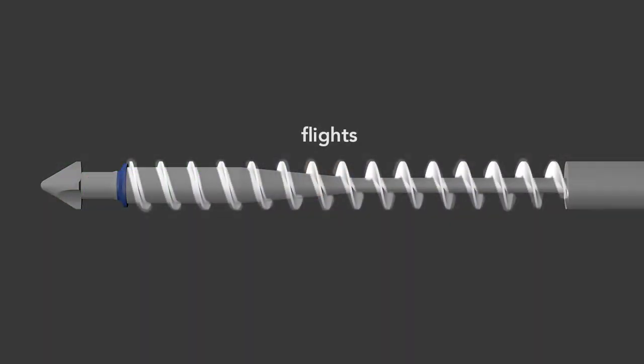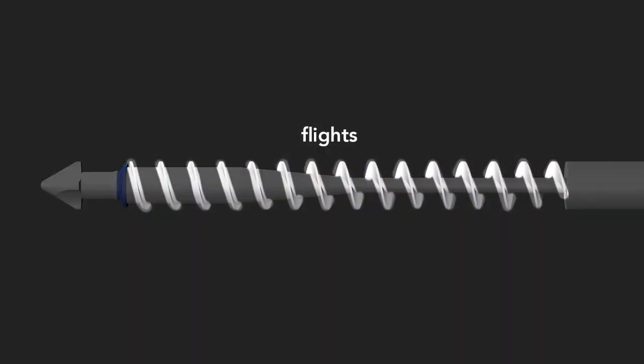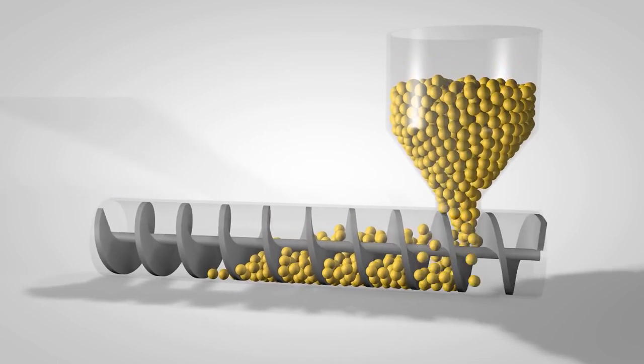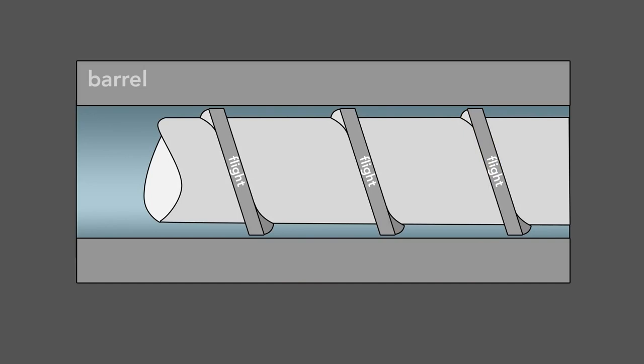Second, the screw has flights that wrap around the shaft. As the screw rotates, the flights transport the raw material forward through the barrel. The flights also serve to mix the plastic. The screw action agitates the melting pellets within the flights to create a uniform mixture.